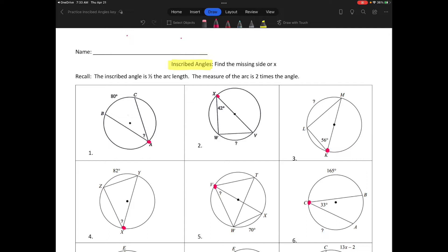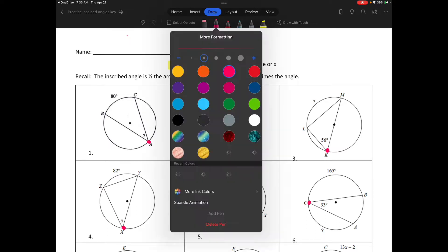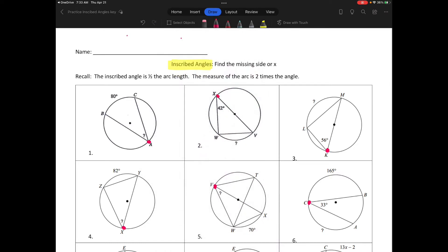With the central angle we just did, the angle measure and the arc measure are congruent. But in an inscribed angle, if you want to find the angle, you take the arc measure and divide by two. If you want to find the arc measure, you take the angle and multiply it times two.